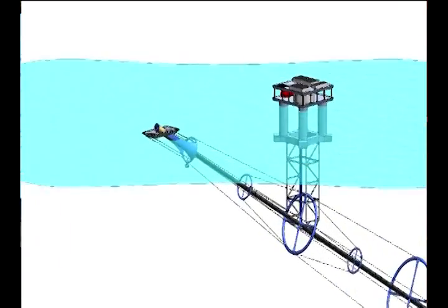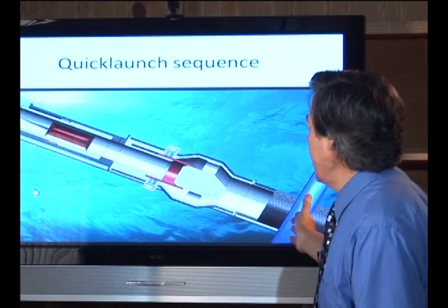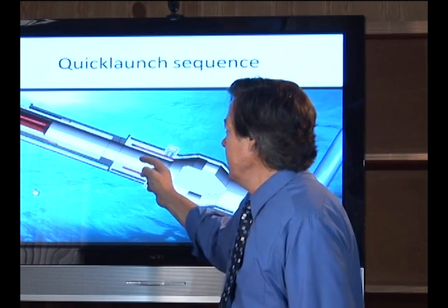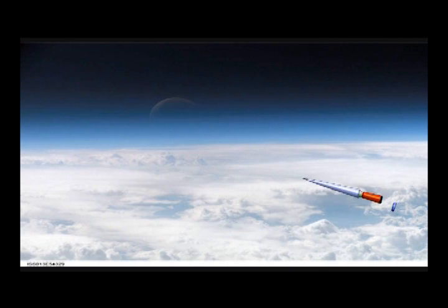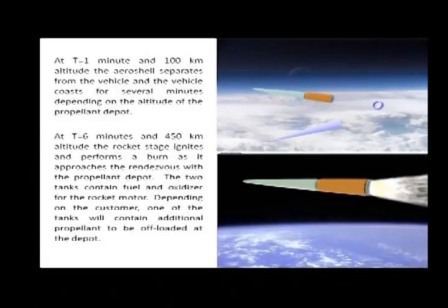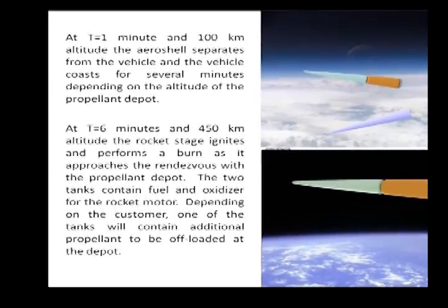Now, it's ready for a shot. Let me walk through the launch sequence for you. Here's the vehicle, release valve. It starts to go down the barrel. Leaves the muzzle. Stabilizer pedals come off. At a hundred clicks, you shed the aeroshell.